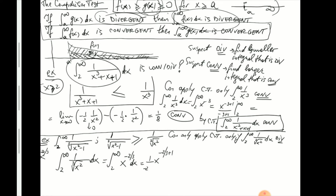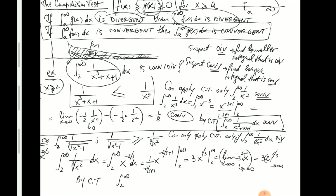Let's check: the integral from 2 to ∞ of x^(−2/3) dx. Using the power rule: −2/3 + 1 = 1/3, so the antiderivative is x^(1/3)/(1/3) = 3x^(1/3) = 3∛x. Evaluating from 2 to ∞: as x → ∞, 3∛x → ∞, so the integral diverges. Therefore, by the comparison test, the integral from 2 to ∞ of 1/∛(x² − 1) must be divergent as well.